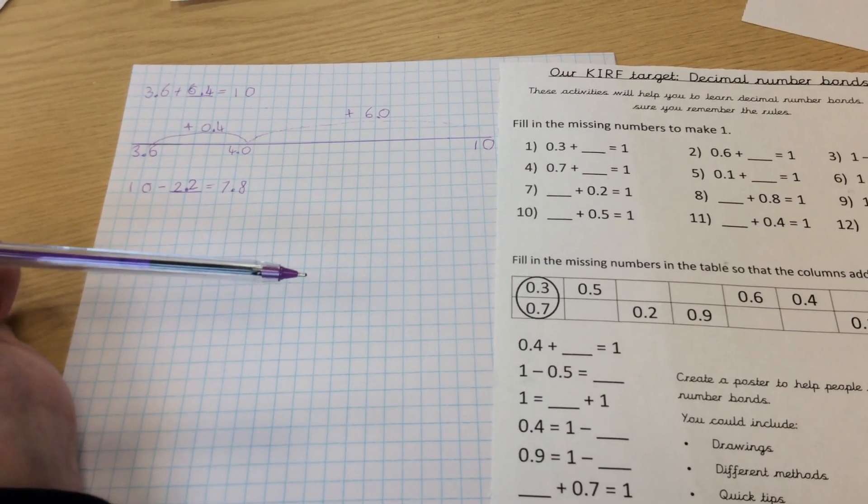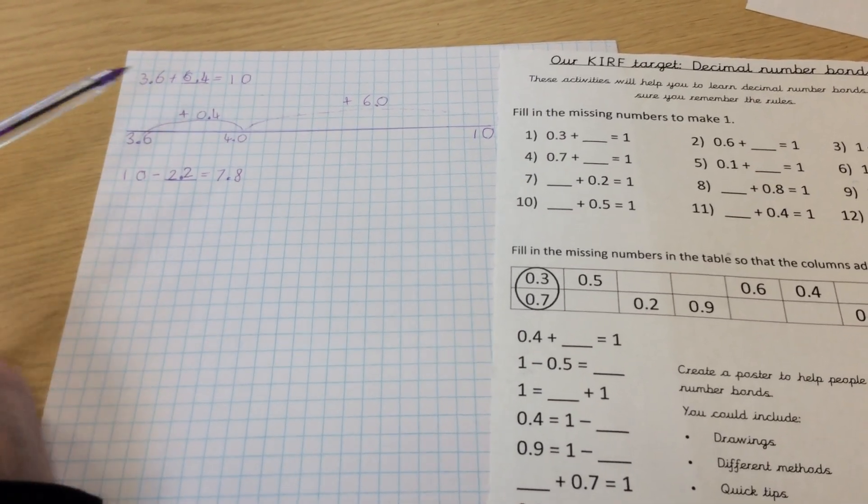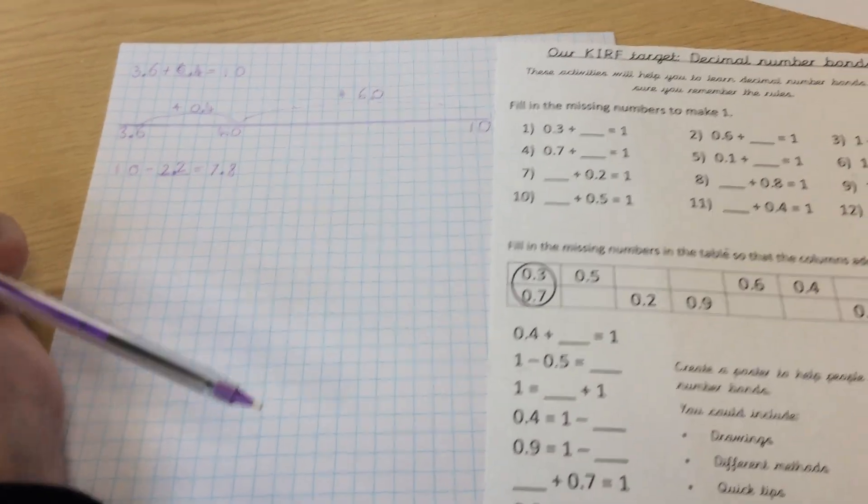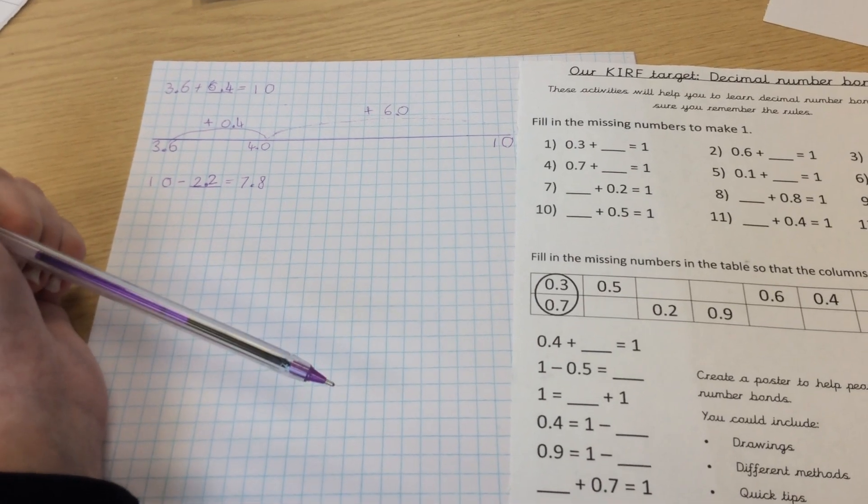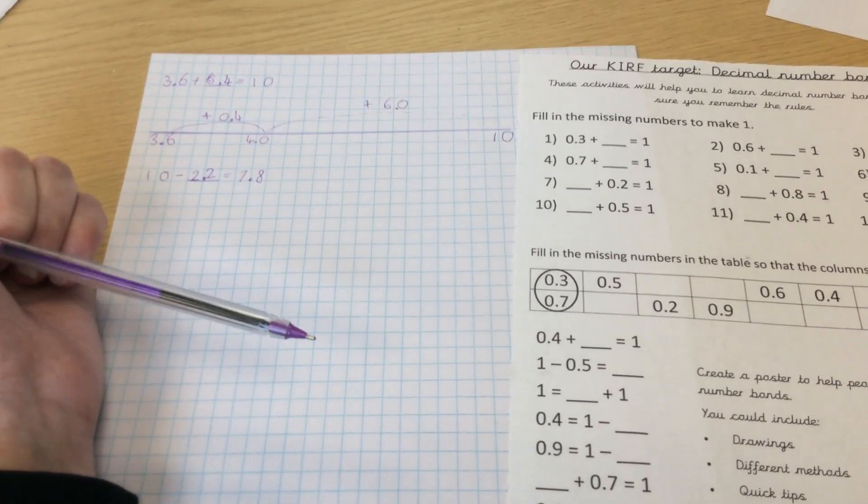The easiest strategy that I can give you to help is to think of your number bonds to 100, because you are really really good at those, so use those to help you with these, okay?